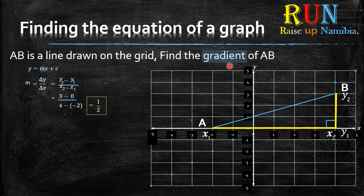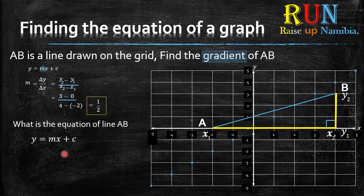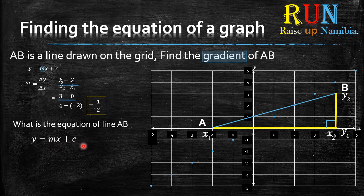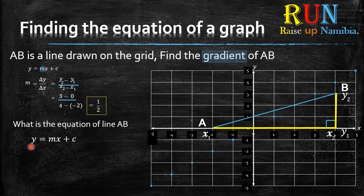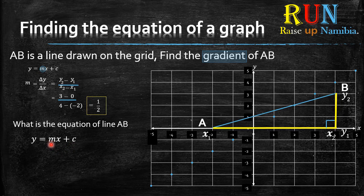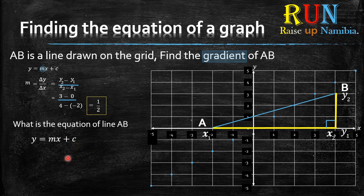Now how do we find the equation? When we talk about the equation, I want you to look at this equation, which is y = mx + c. Because the line AB is a straight line, we focus on this equation. Now I want you to focus on two letters, which is the m and the c. You need to know that the m is the gradient and the c is the y-intercept.